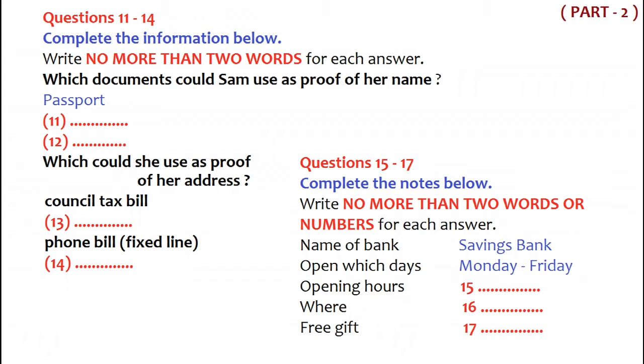There's one other you might want to use. A vehicle registration document. If you have a car or a motorbike or something, of course. No, I haven't actually. Now, I believe there's a bank actually inside the commercial centre. And I might open account there, seeing as how that's where I'll be every day.